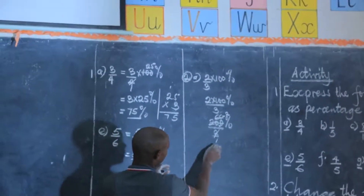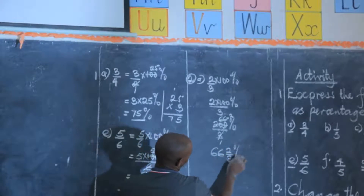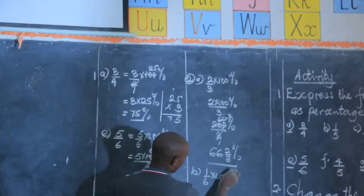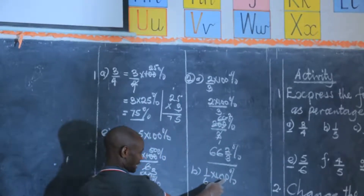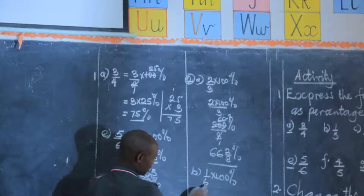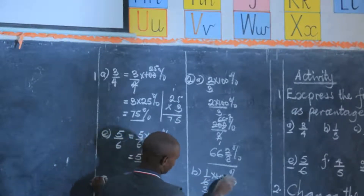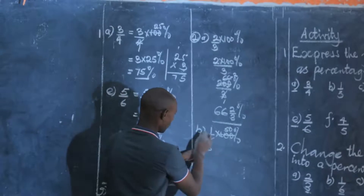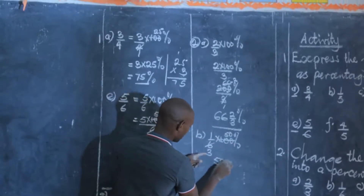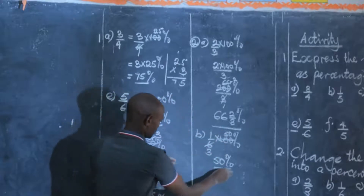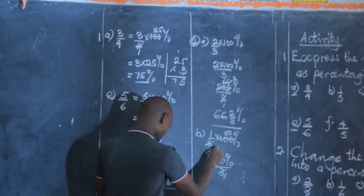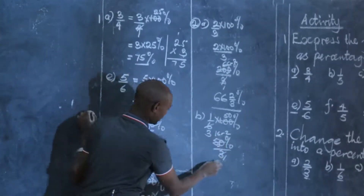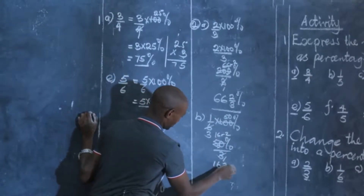Number two (b): 1 out of 6 times 100%. 100 is not exactly divisible by 6, but we can use 2 — 100 divided by 2 is 50 — so we have 1 times 50, which is 50 out of 3. 3 goes into 5 once remainder 2, then into 20 is 6 remainder 2, giving 16 and two-thirds percent.